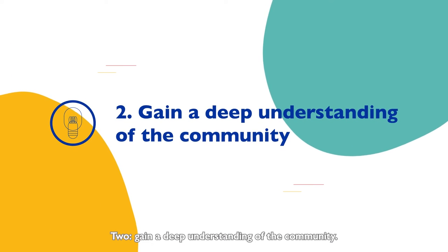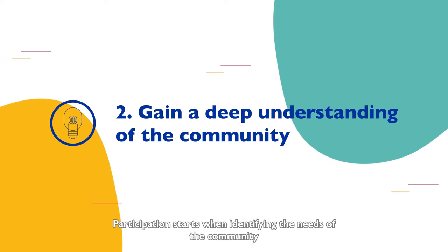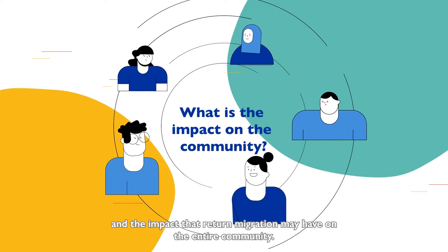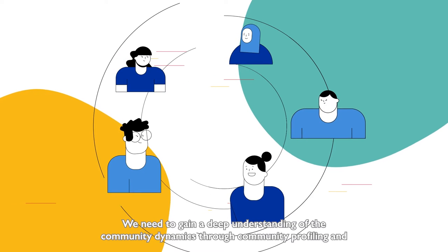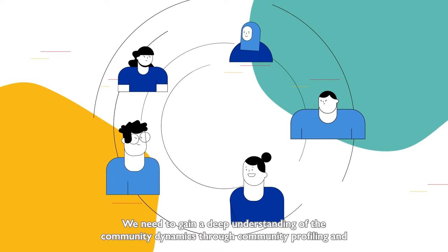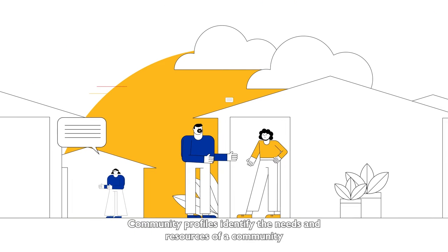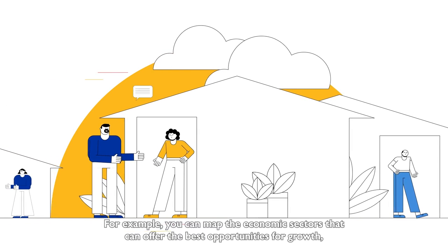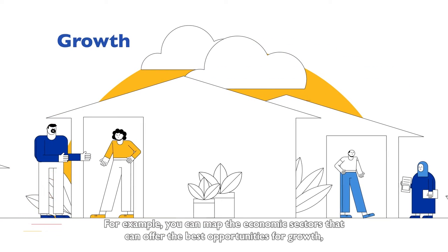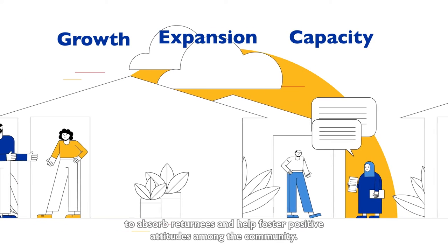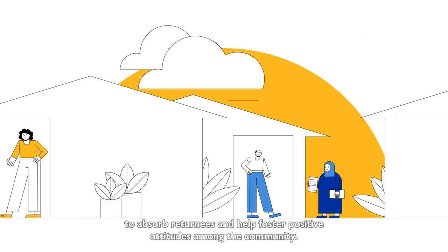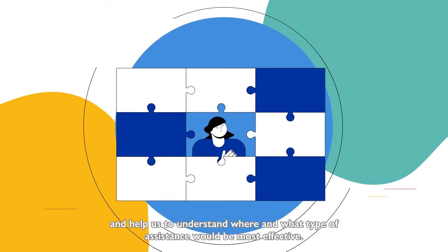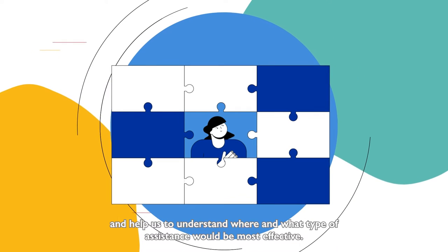2. Gain a deep understanding of the community. Participation starts when identifying the needs of the community and the impact that return migration may have on the entire community. We need to gain a deep understanding of the community dynamics through community profiling and assessment. Community profiles identify the needs and resources of a community and the impact of return migration on these. For example, you can map the economic sectors that can offer the best opportunities for growth, expansion, and capacity to absorb returnees and help foster positive attitudes among the community. Assessments give us information on existing gaps and possible synergies, and help us to understand where and what type of assistance would be most effective.